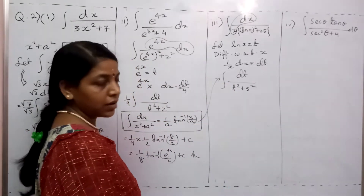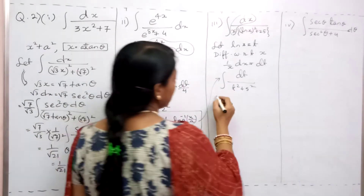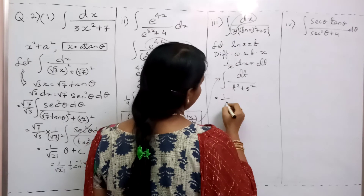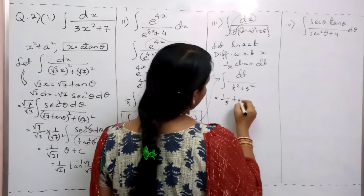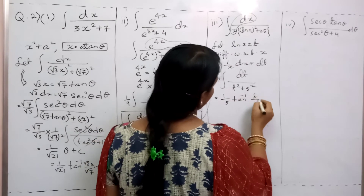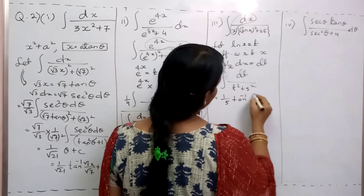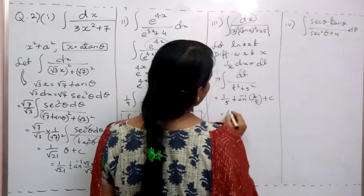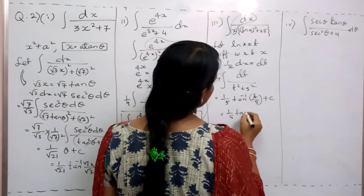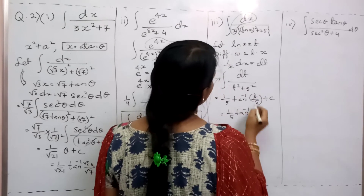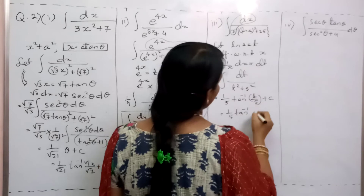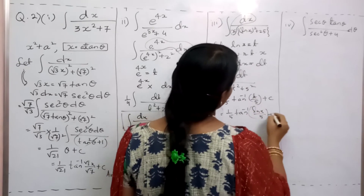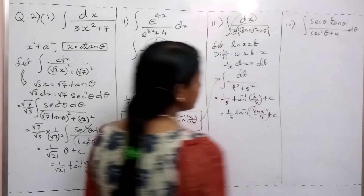Now it is in the same format. So what I will write: (1/a) · tan⁻¹(t/a), where a = 5. So the answer is (1/5) · tan⁻¹(t/5) + c = (1/5) · tan⁻¹(ln x / 5) + c.